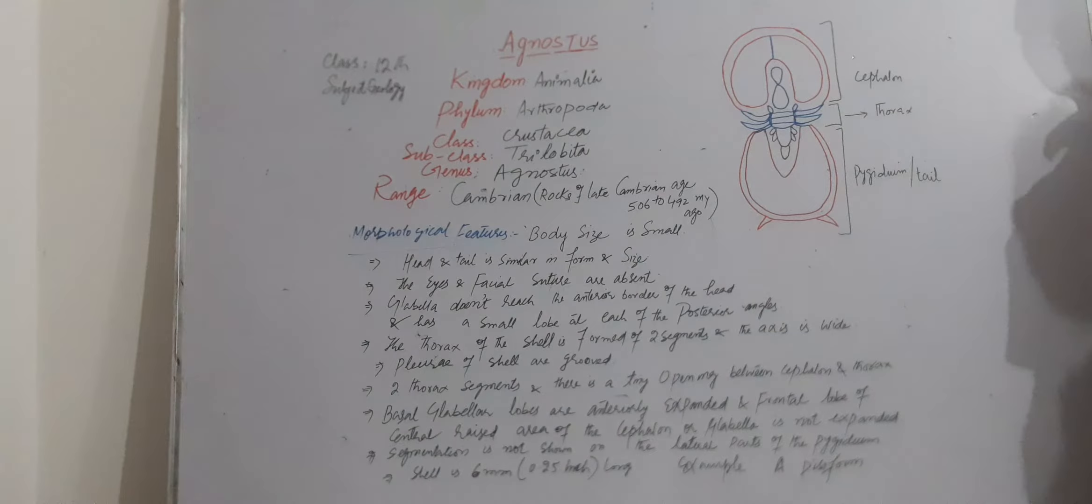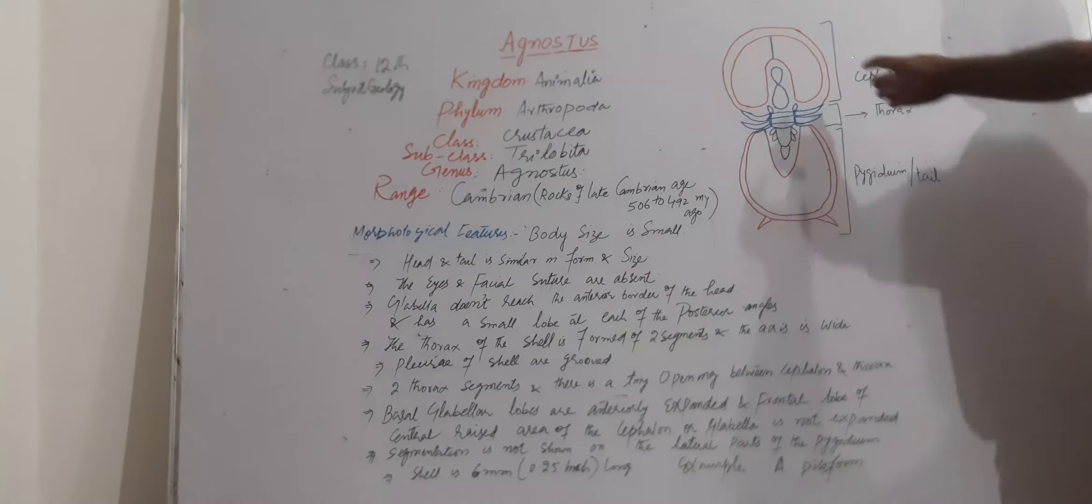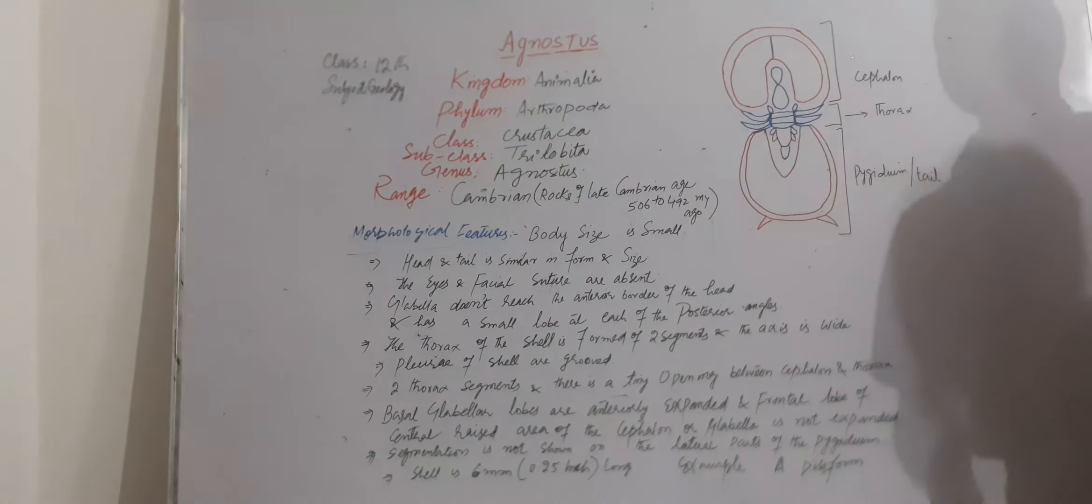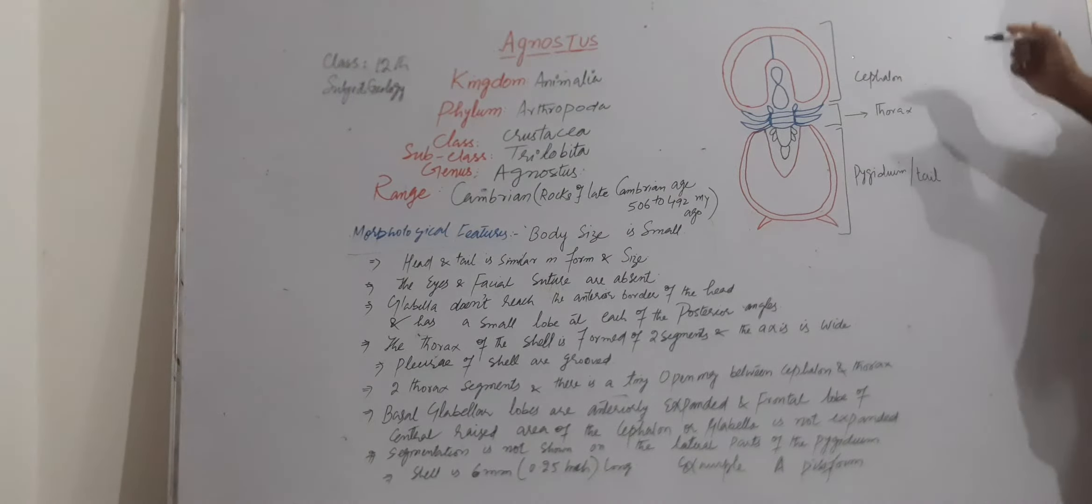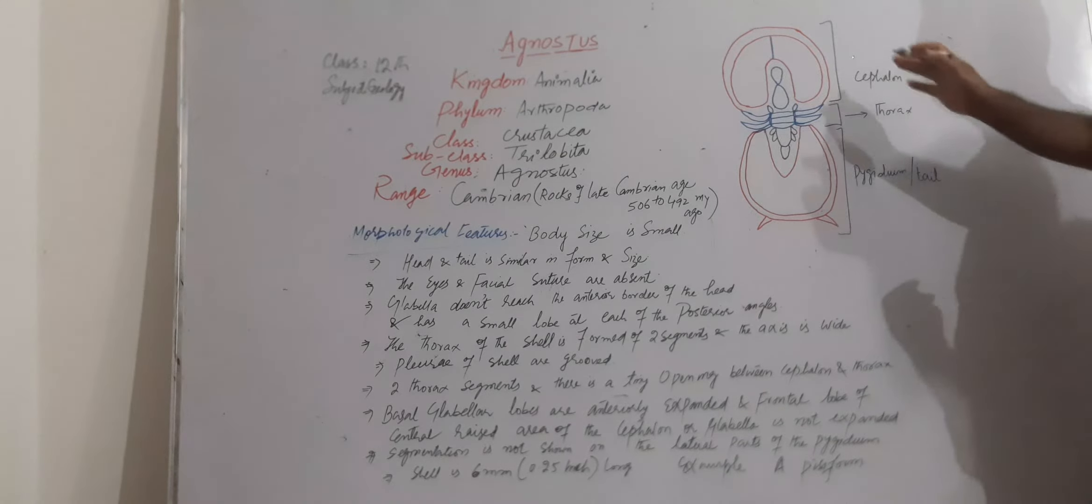As you see here, there is not any mark of eyes, or we can say eyes are absent. Also the facial sutures, which we have seen in the previous shells in Calymene or Parabrazide, but here in this shell the facial sutures or eyes are absent.